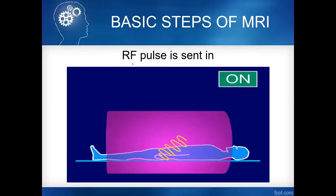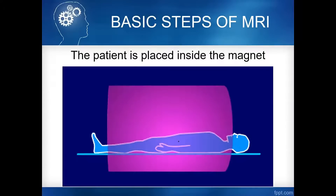The second step: let me add what happens when the patient is exposed to the strong magnetic field. Number one is alignment — alignment of hydrogen protons in the same direction as the magnetic field. Number two is precession. Precession is the wobbling motion of the hydrogen proton, similar to a spinning top. Precession occurs once the patient is exposed to the strong magnetic field, due to the influence of the external magnetic field.